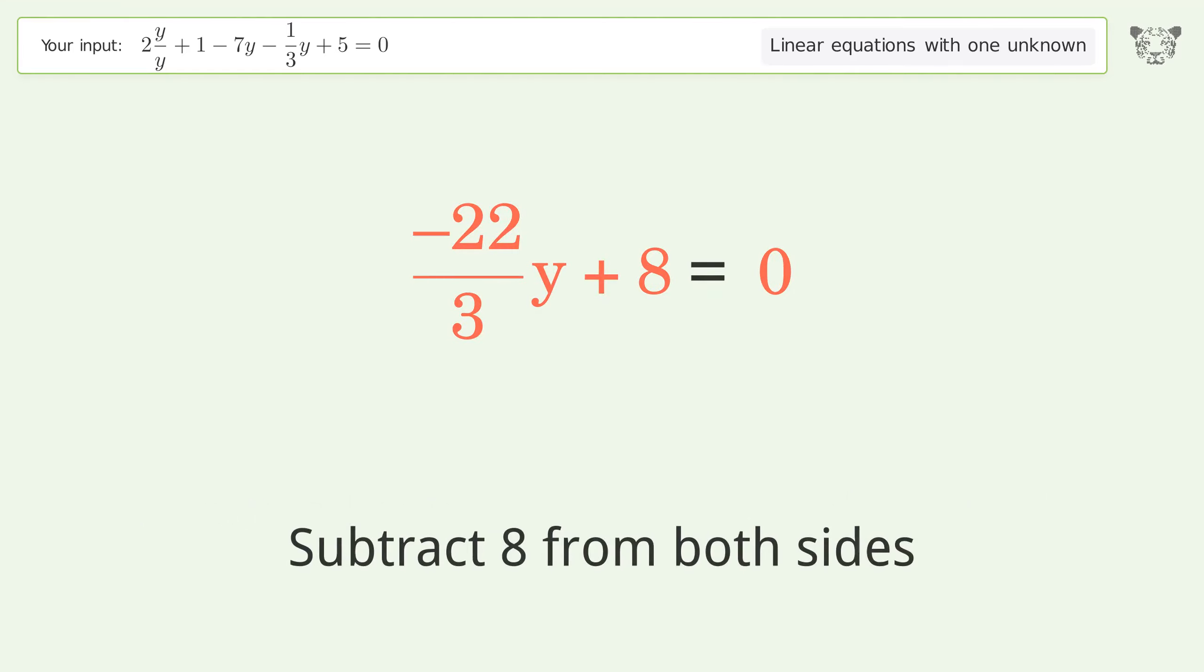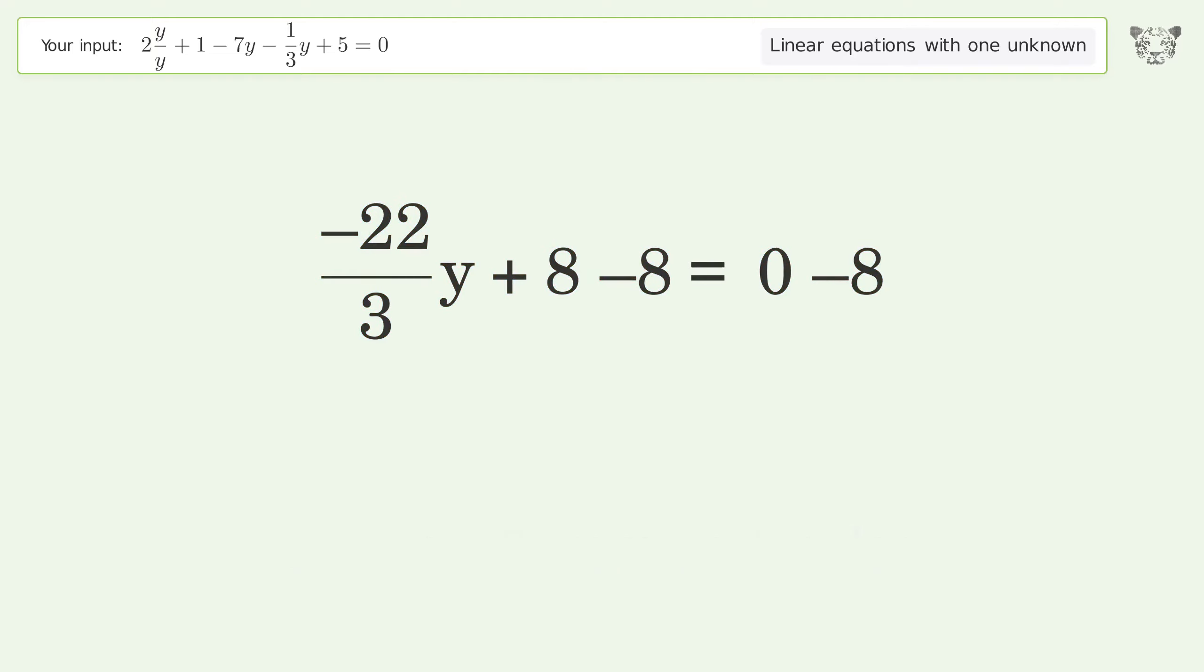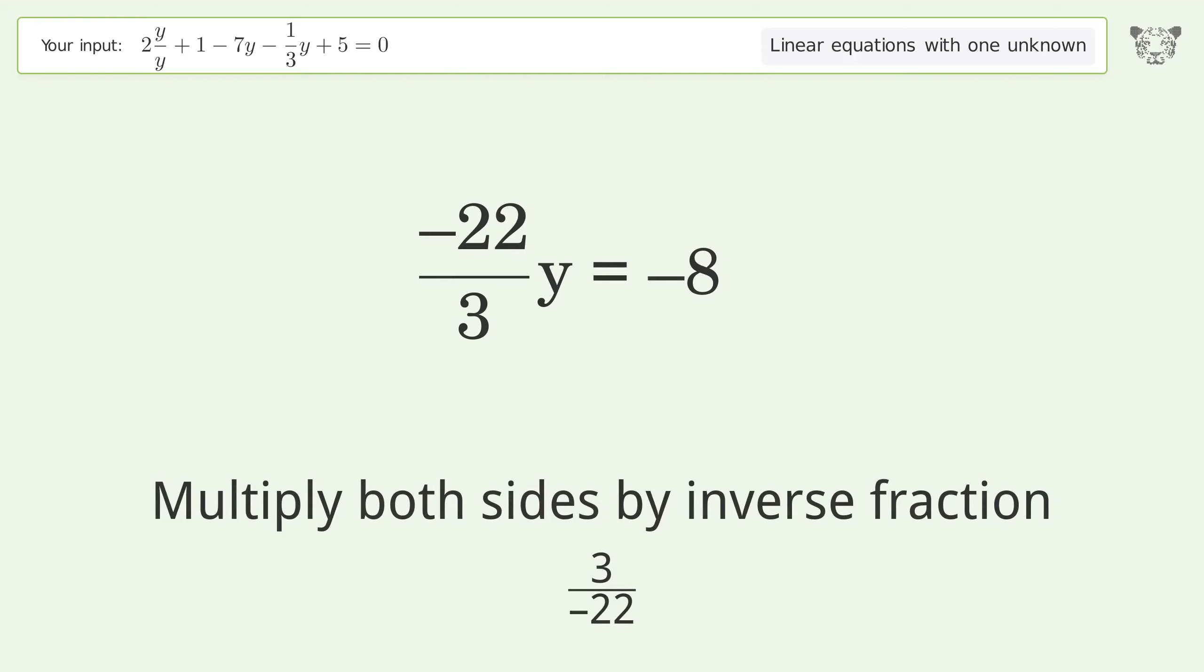Subtract 8 from both sides. Simplify the arithmetic. Isolate the y. Multiply both sides by inverse fraction 3 over negative 22.